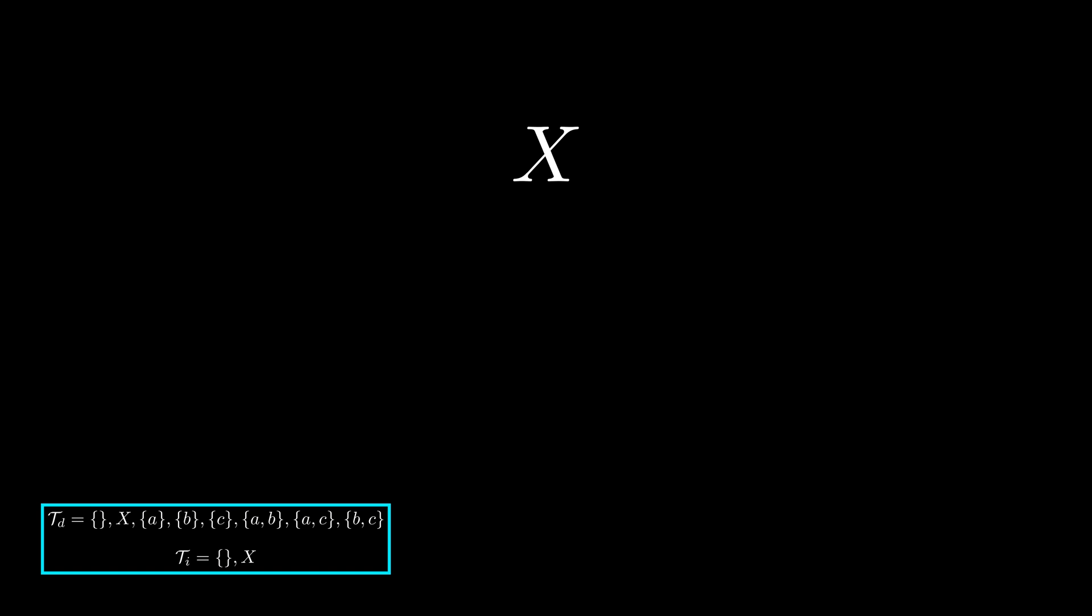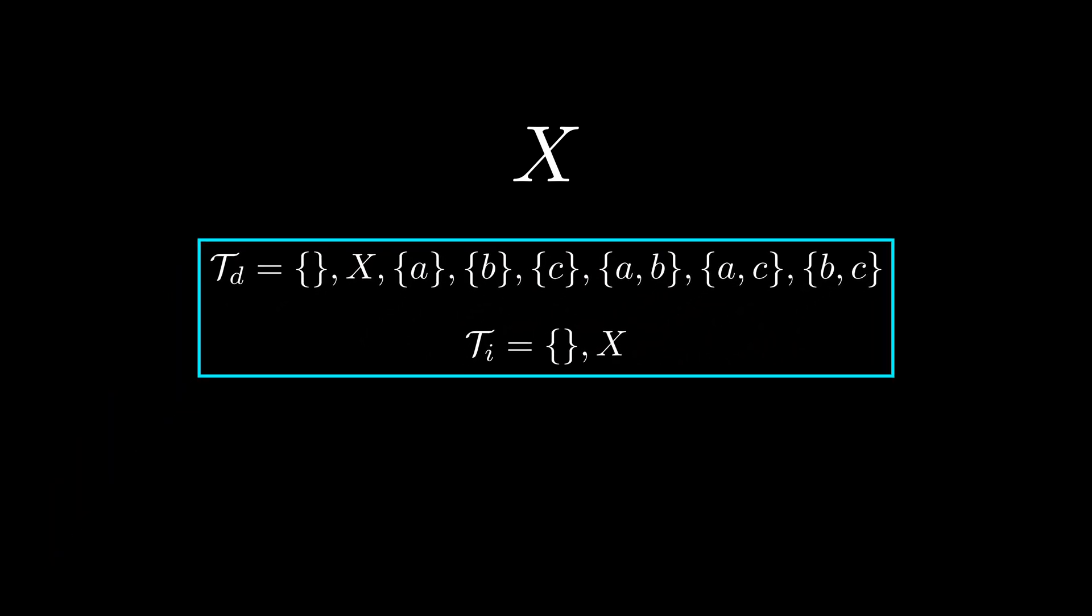Now, in any instance, when you are given a specific set, there is a genuine choice you have of which topology you can establish on it. And for any set, you can always choose to collect all of the subsets, which will establish the so-called discrete topology.